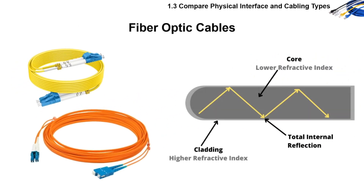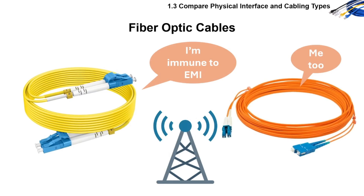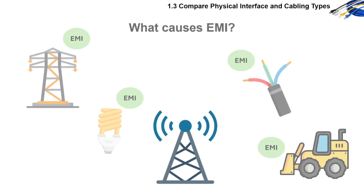Let's start with fiber optic cables first. Fiber optic cables transmit data using light, not electricity. That's why fiber is immune to electromagnetic interference, or EMI, since light is not affected by electromagnetic fields. EMI is caused by things like power lines, fluorescent lights, heavy machinery, and nearby electrical cables.